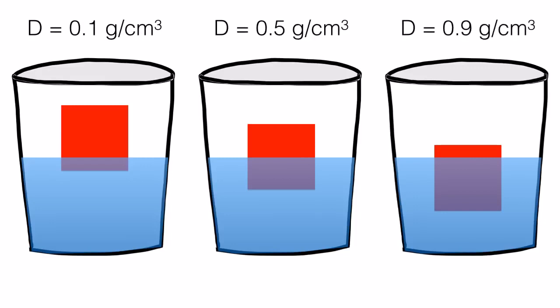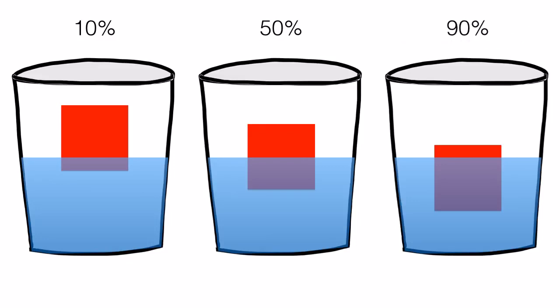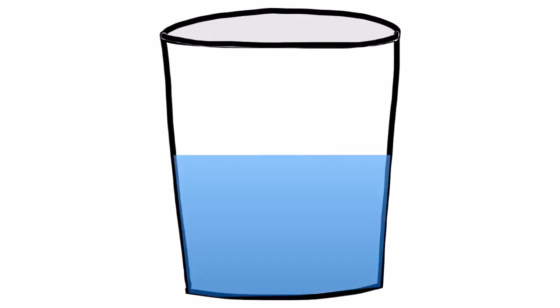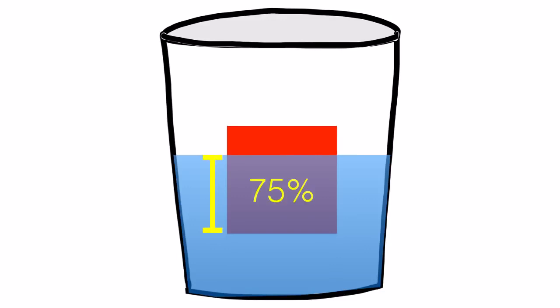But, if you take a closer look, you see that as density increases, more of the block is below the waterline. Scientists have figured out the density of a block converted to a percentage is equal to the amount below the waterline. For example, if 75% of a block is below the waterline, its density is 0.75.